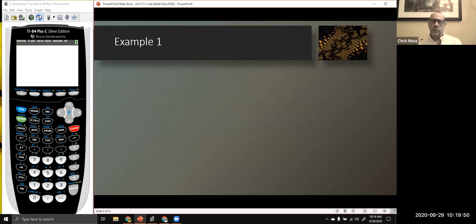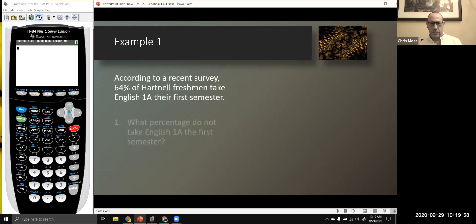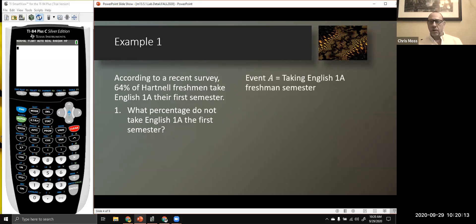Here's our first example. According to a recent survey, 64% of Hartnell freshmen take English 1A their first semester. The first question is, what percentage of students do not take English 1A the first semester? So it's really not about the students that take the class at all. It's about those that do not take the class. Those are two simple events. You either take it or you don't take the class.